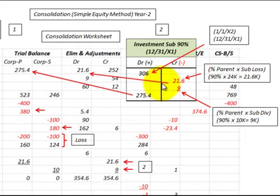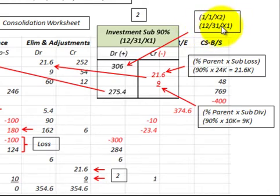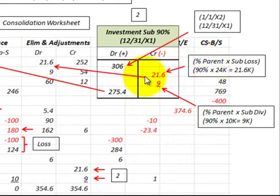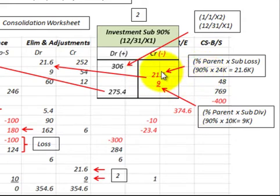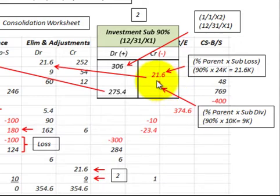We have to bring the investment back to $306,000, which is what it would have been at 12/31 of X1 — the end of year one, which equals the beginning of year two, January 1st. In this case, the subsidiary had a loss of $24,000 — revenues were less than expenses by $24,000 — so the parent got 90% of that, which is $21,600, credited to the investment in the sub. The subsidiary also declared a dividend, and the parent got 90% of that, which was $9,000, also credited to reduce the sub account.